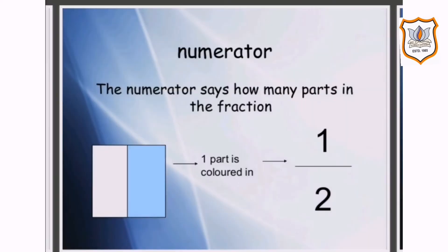Numerator. The numerator says how many parts are in the fraction. For example, a figure is given which is divided into two parts and one part is colored. So the colored part is called the numerator and the total parts is called the denominator. So one is the numerator here.